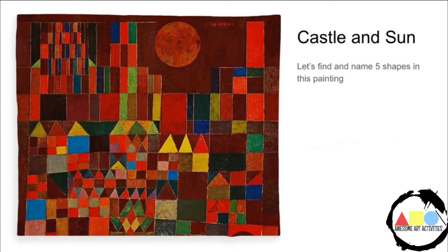Did you find five shapes? If you didn't, here's a clue. I see a circle, a triangle, a diamond, a rectangle, and I even see a trapezoid in there.